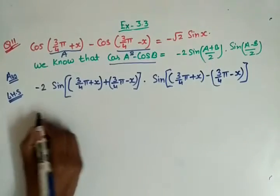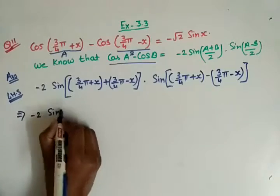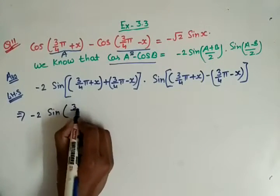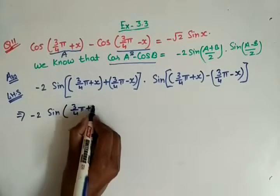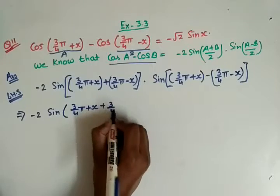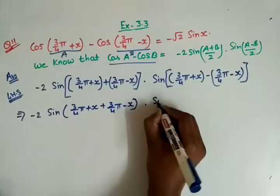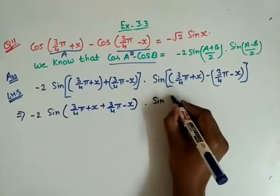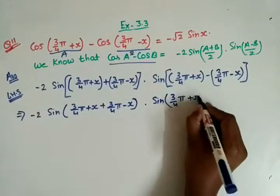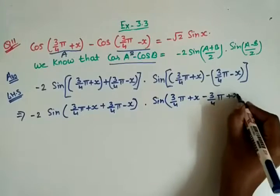This will become -2 sin[(3π/4 + x + 3π/4 - x)/2] · sin[(3π/4 + x + x - 3π/4 - x)/2].